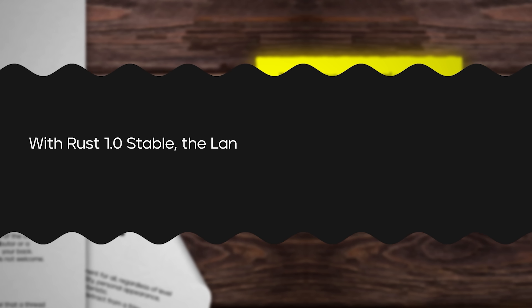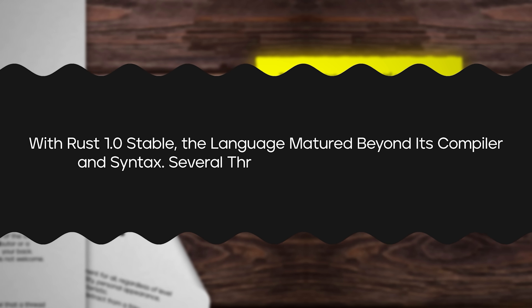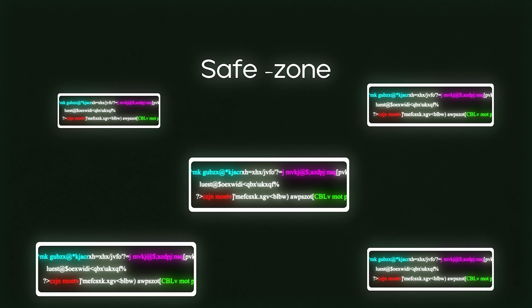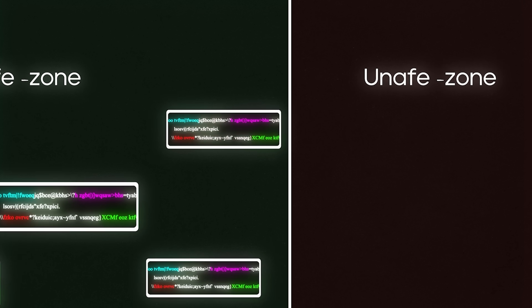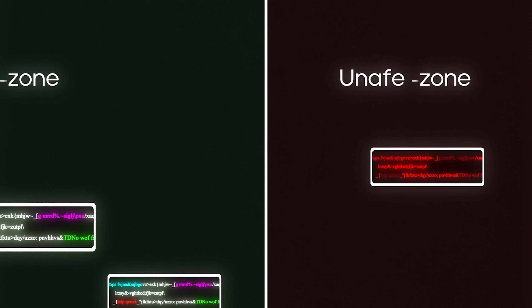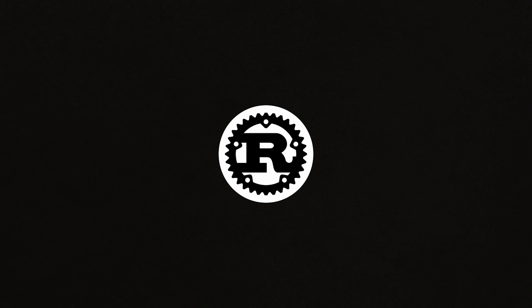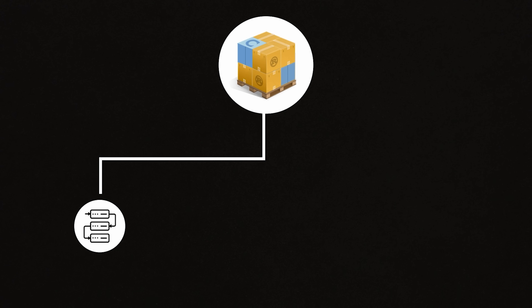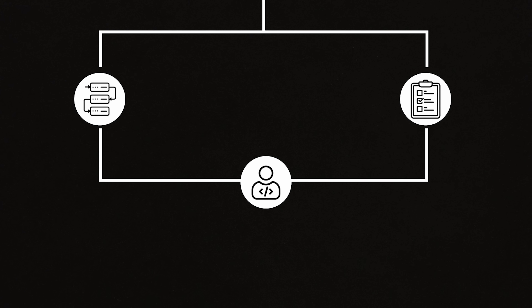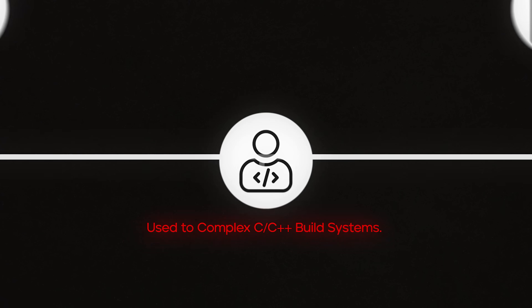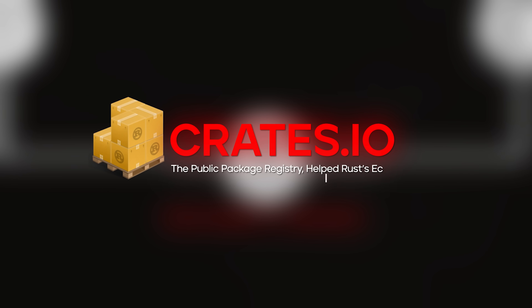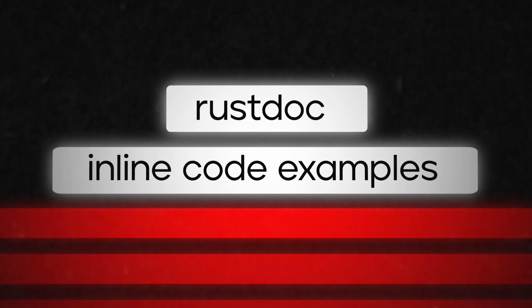With Rust 1.0 stable, the language matured beyond its compiler and syntax. Rust allows low-level control through unsafe blocks — explicit zones where developers can bypass safety checks — marked clearly and kept isolated so most of the codebase stays safe by default. Rust's package manager, Cargo, brought seamless dependency management and streamlined testing, a revelation for developers used to complex C and C++ build systems. Crates.io helped Rust's ecosystem thrive. Rust also made RustDoc and inline code examples first-class citizens — examples are tested automatically, making documentation trustworthy, and unit testing is built in, fostering a strong test culture.